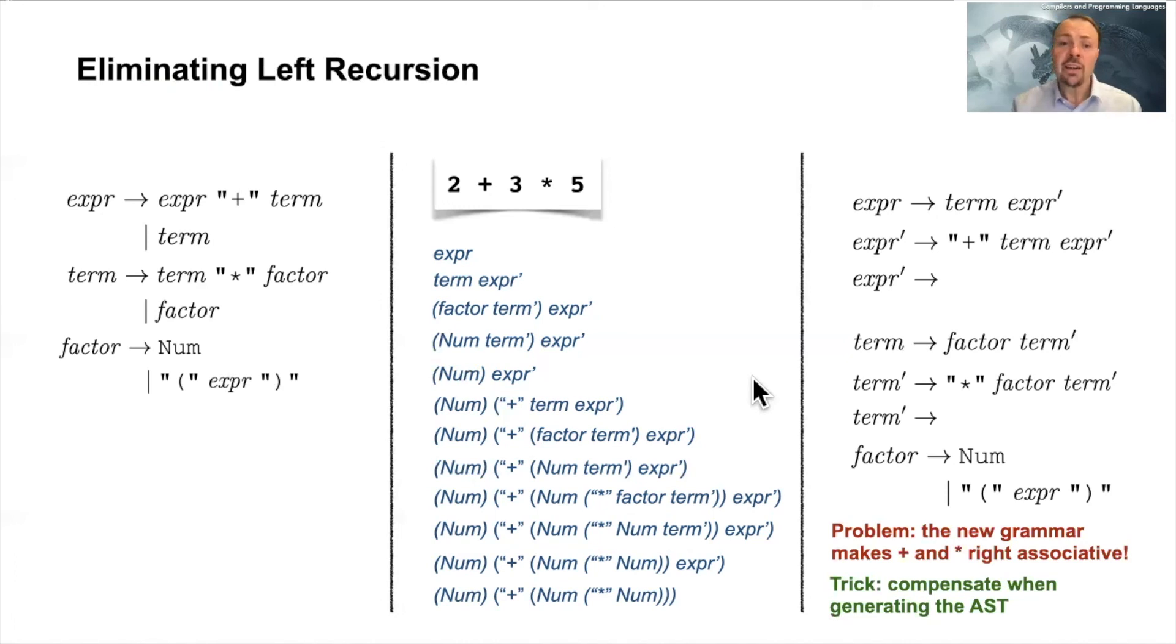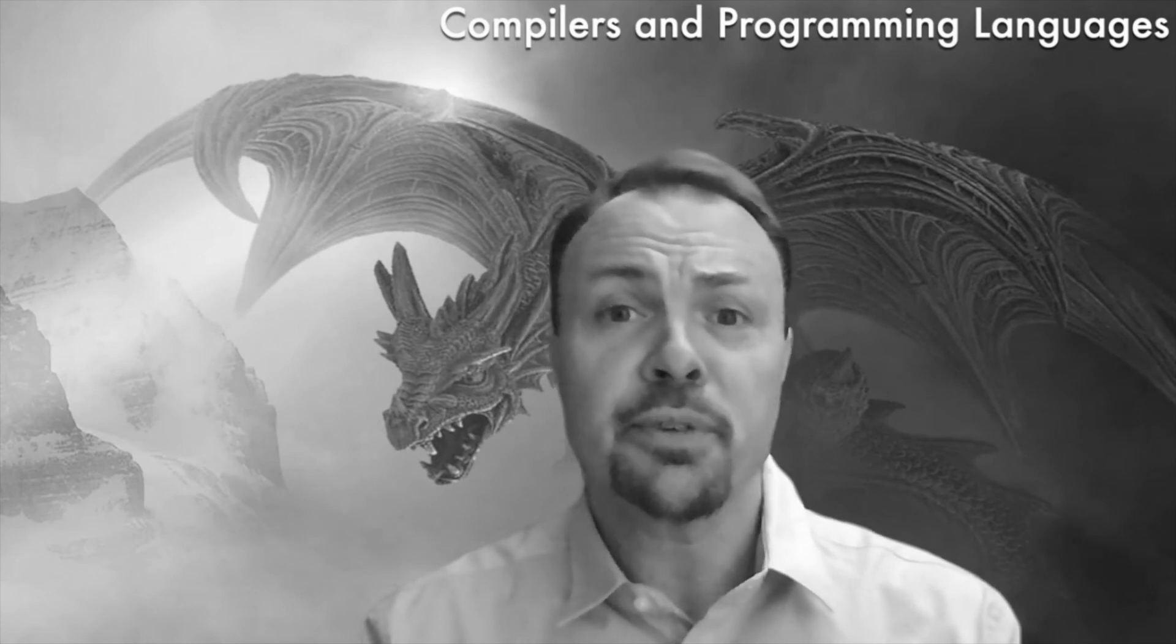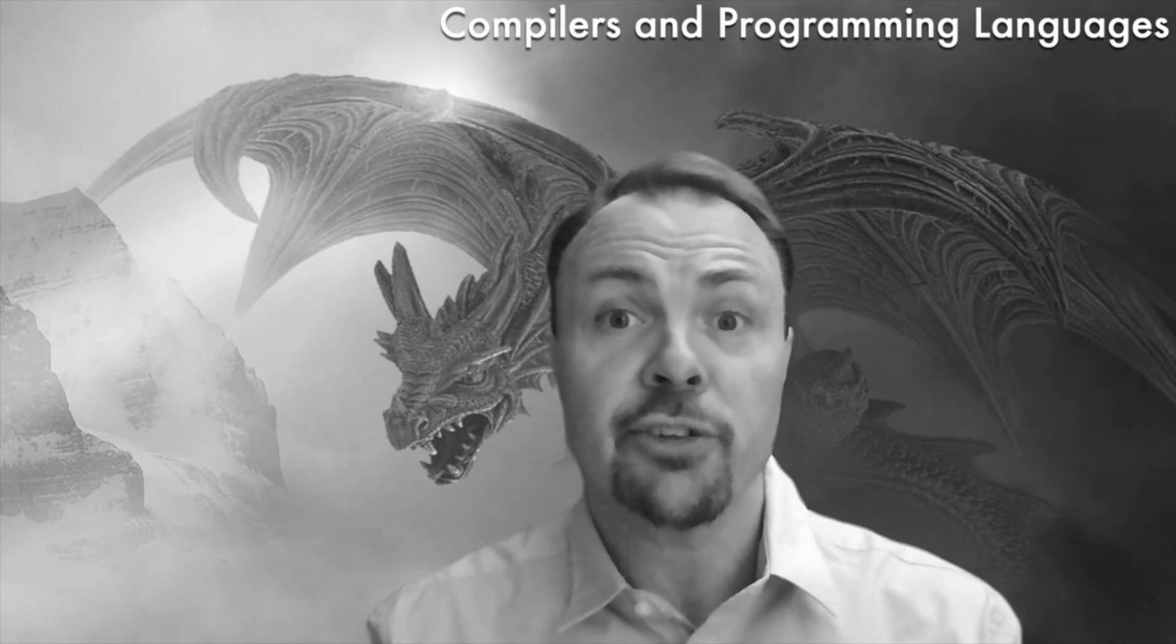The precedence is correct, but we get a right associativity even though we wanted left associativity. And this cannot be solved directly in the grammar, but instead the trick is that we solve this when we're writing our recursive descent parser. We are regenerating the left associativity when we are creating the AST while we are parsing, so I will show that in an upcoming video. Okay, so I hope that you learned something about elimination of left recursion. Thank you very much for listening. If you like this video, please subscribe and add a comment and tell me more about what you want to learn about compilers and programming languages.